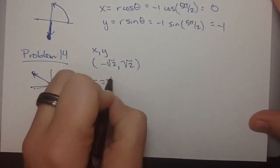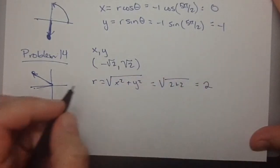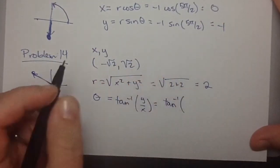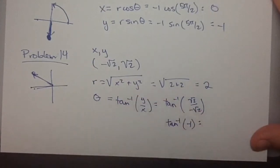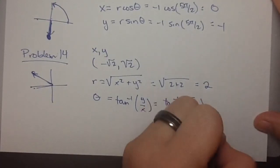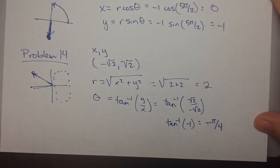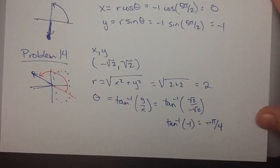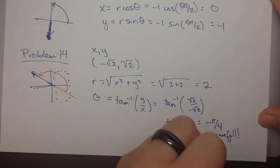So r is the square root of x squared plus y squared. So we've got the square root of 2 plus 2, which is just 2. And theta is the inverse tangent of y over x, which is root 2 over negative root 2. So the inverse tangent of negative 1. So be careful here. When you're doing this in your calculator, you're going to get negative pi over 4, right? Because tangent gives you answers in the first and fourth quadrant. But you've got to know that negative pi over 4 is the same as 3 pi over 4. So you have to be wise here. Be careful. Or 3 pi by 4.